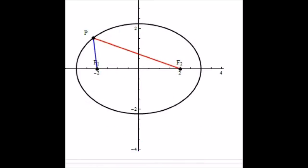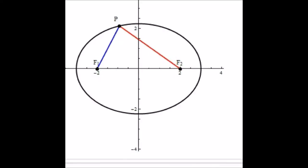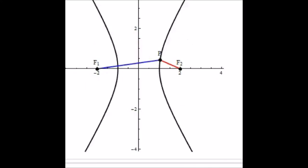I'll try and convince you of that later with an actual physical model. Now let's move on to the other extreme case, which is the parabola. The parabola is again defined with respect to a pair of focus points, F1 and F2, and it's defined as the set of all points P such that the distance from P to one focus minus the distance from P to the other focus is always equal, up to a minus sign.